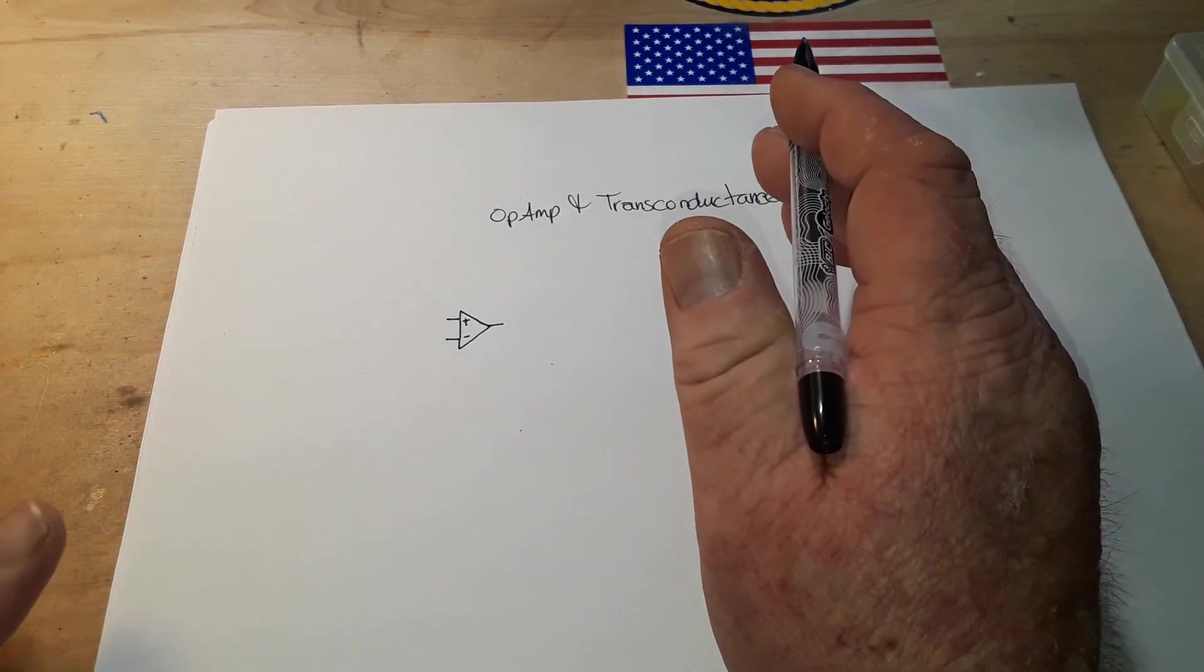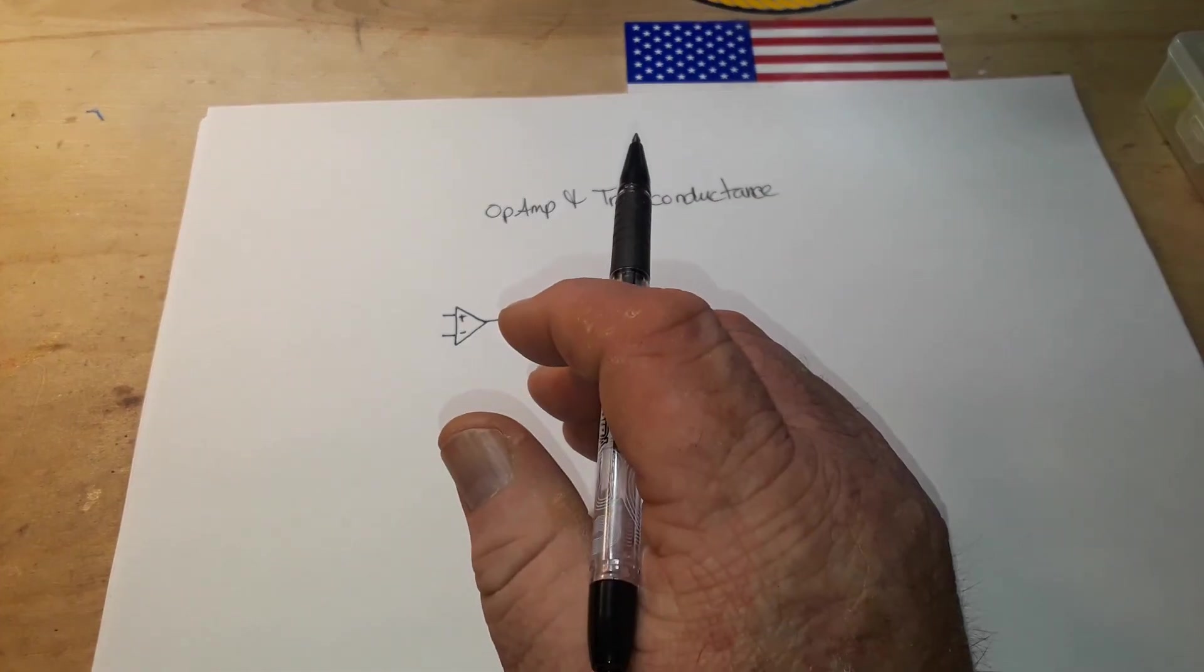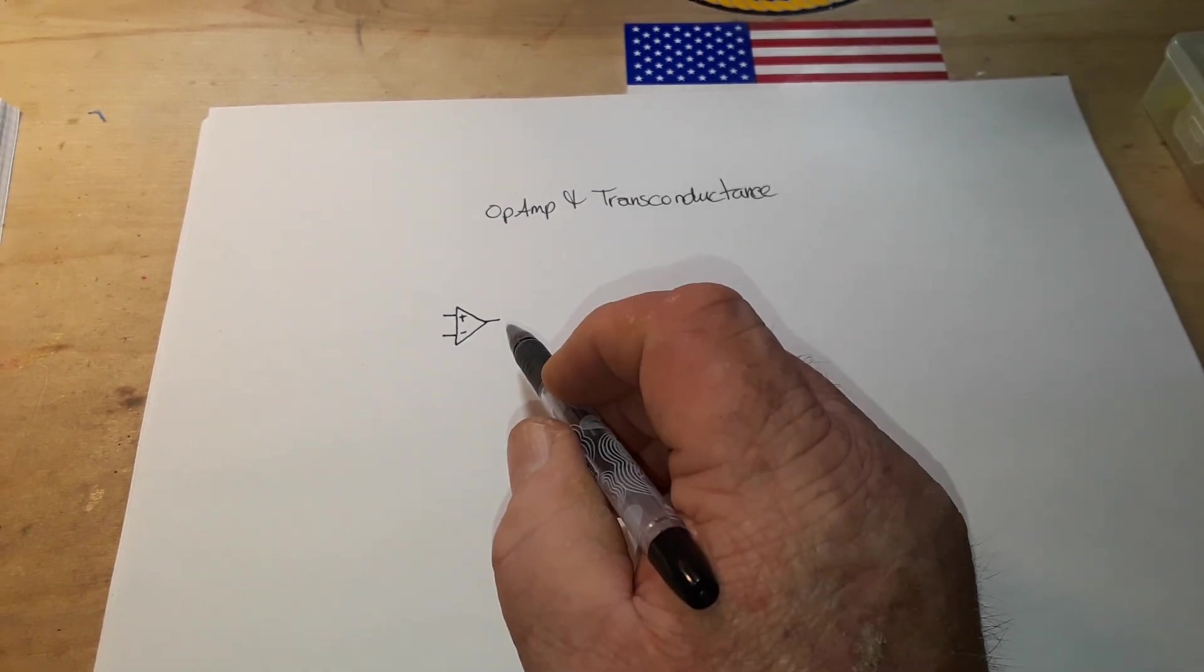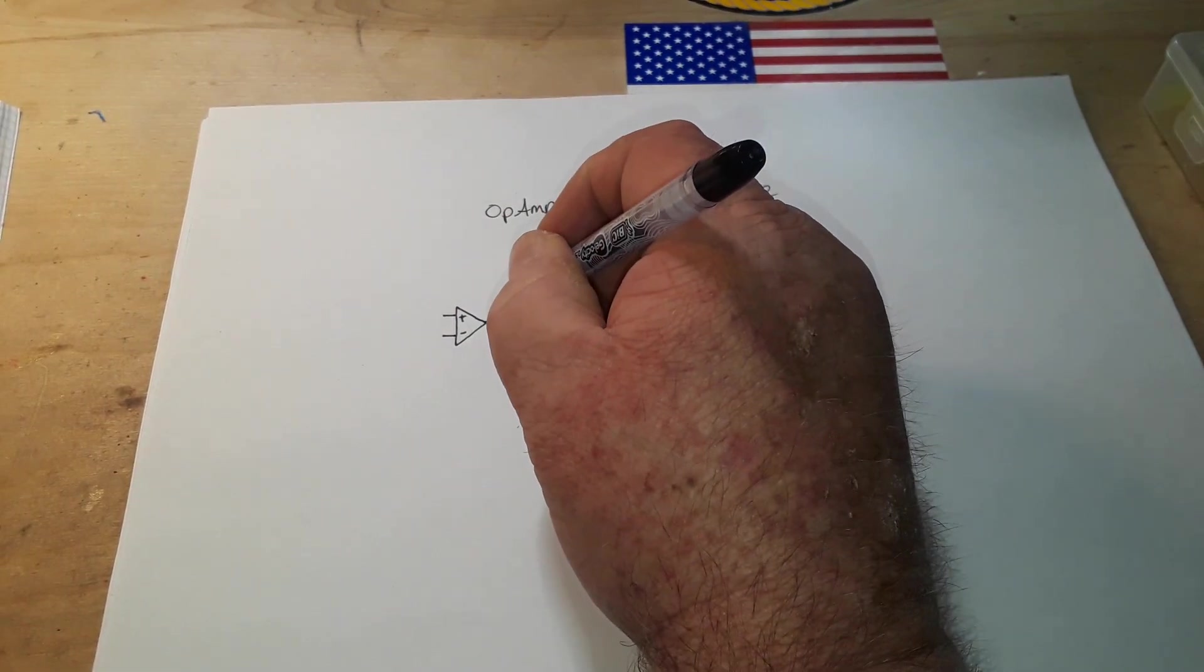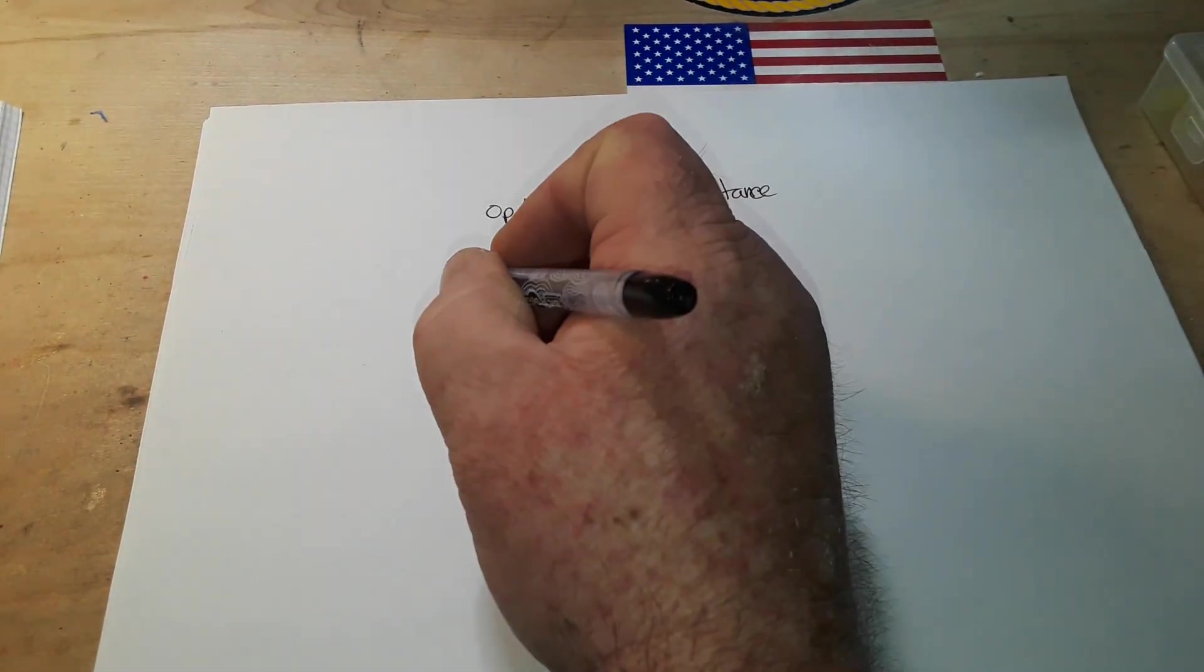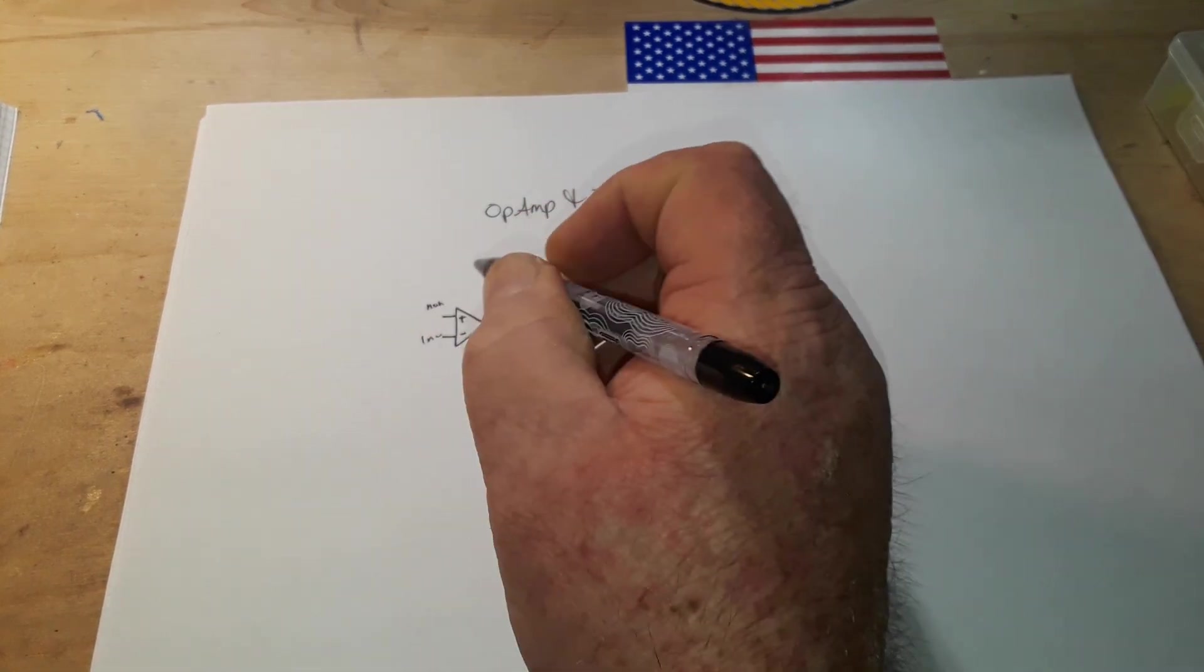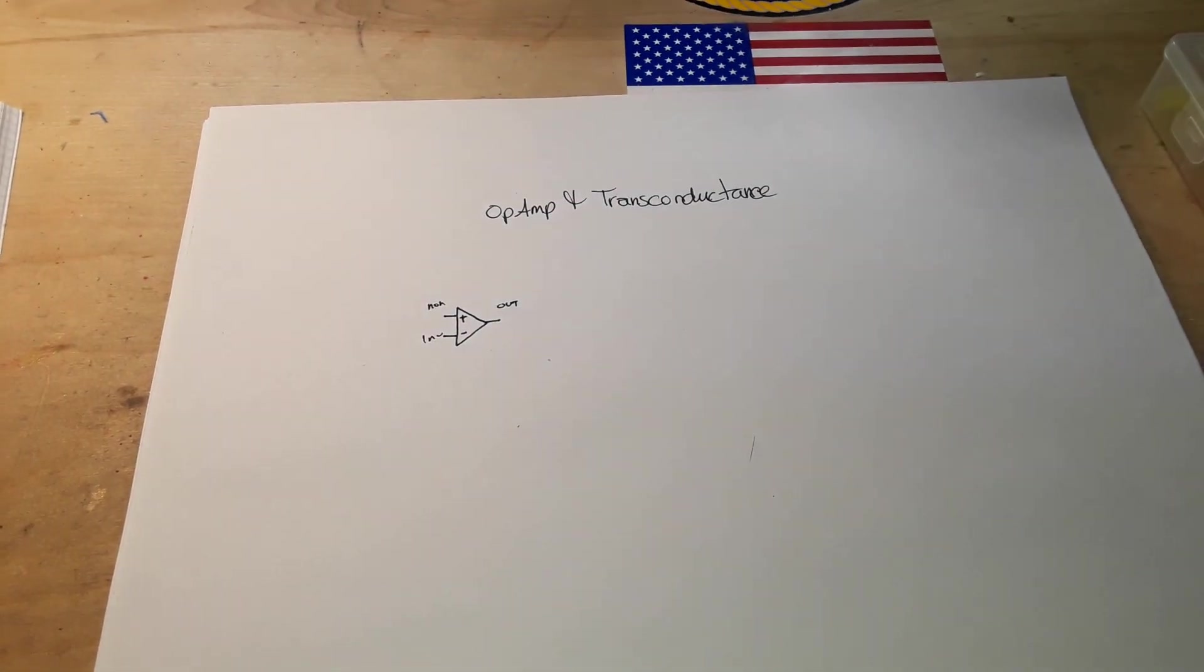So today we're going to be talking about op amps and transconductance. Here is the basic symbol for an op amp. We have our output over here, we have our non-inverting input and our inverting input. It doesn't matter which one is on top, which one's on the bottom.